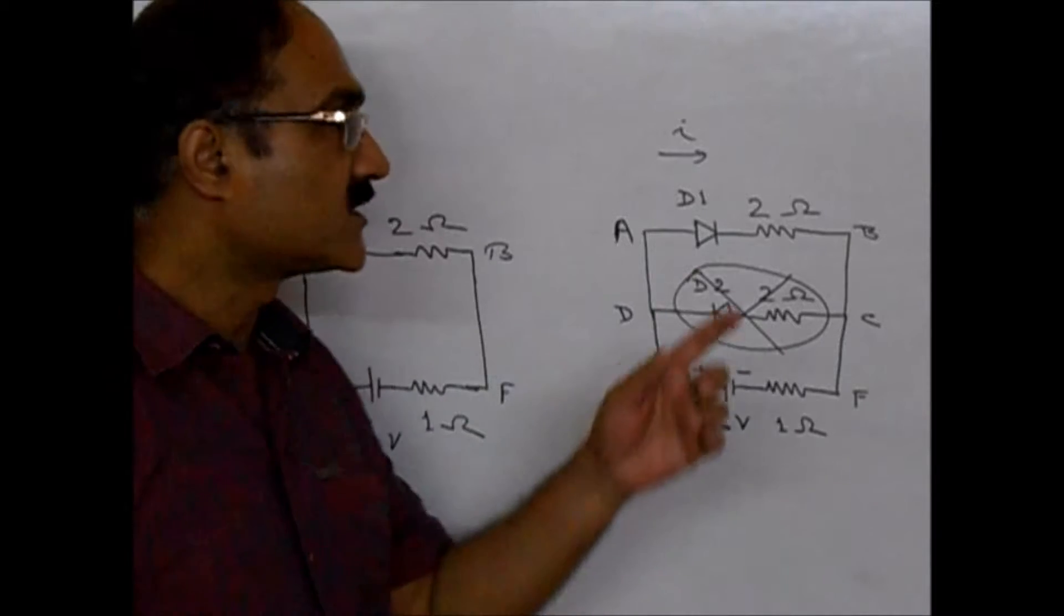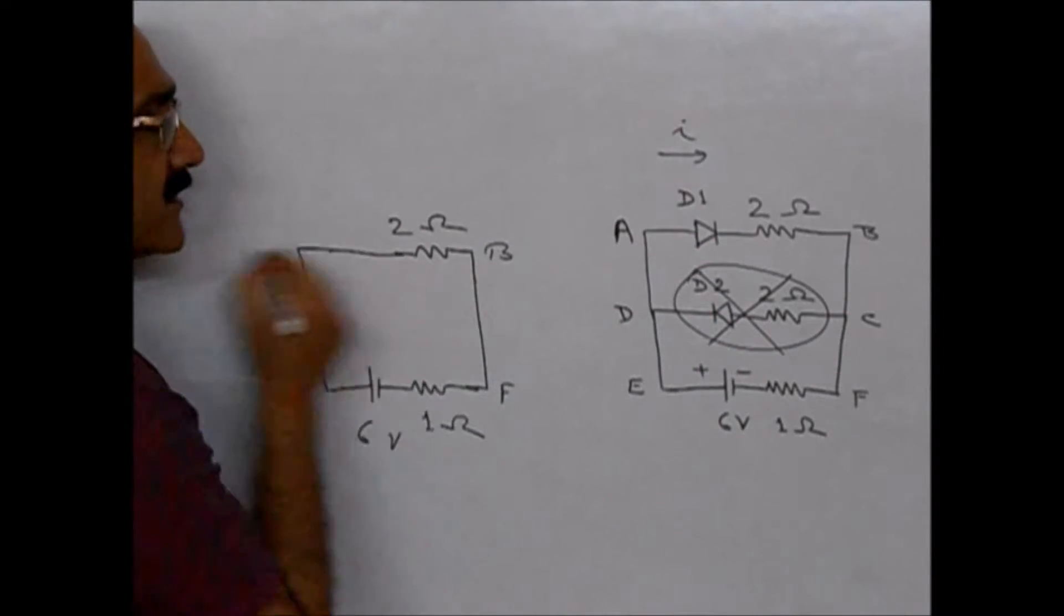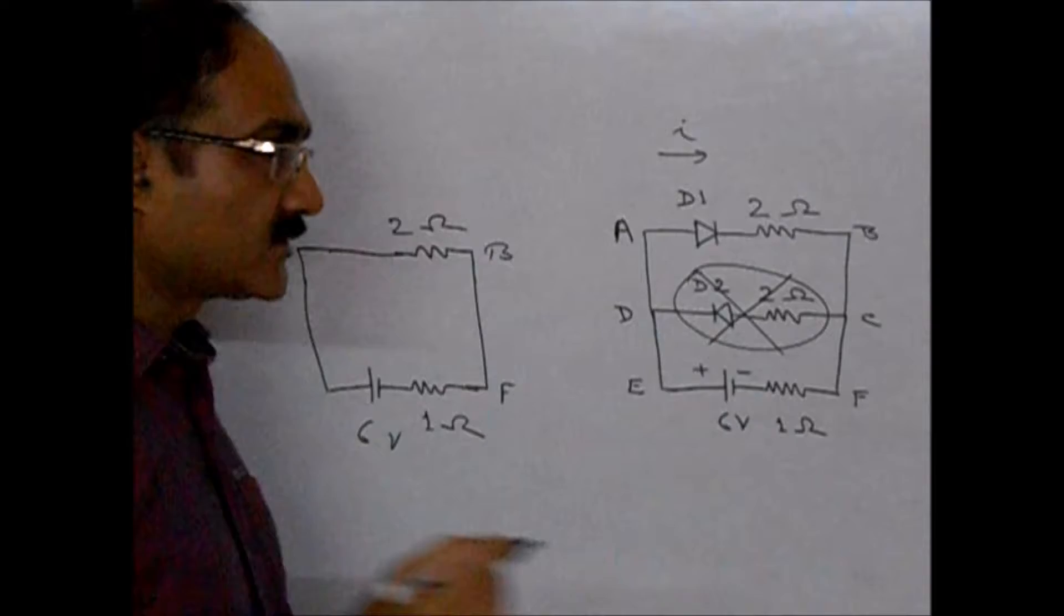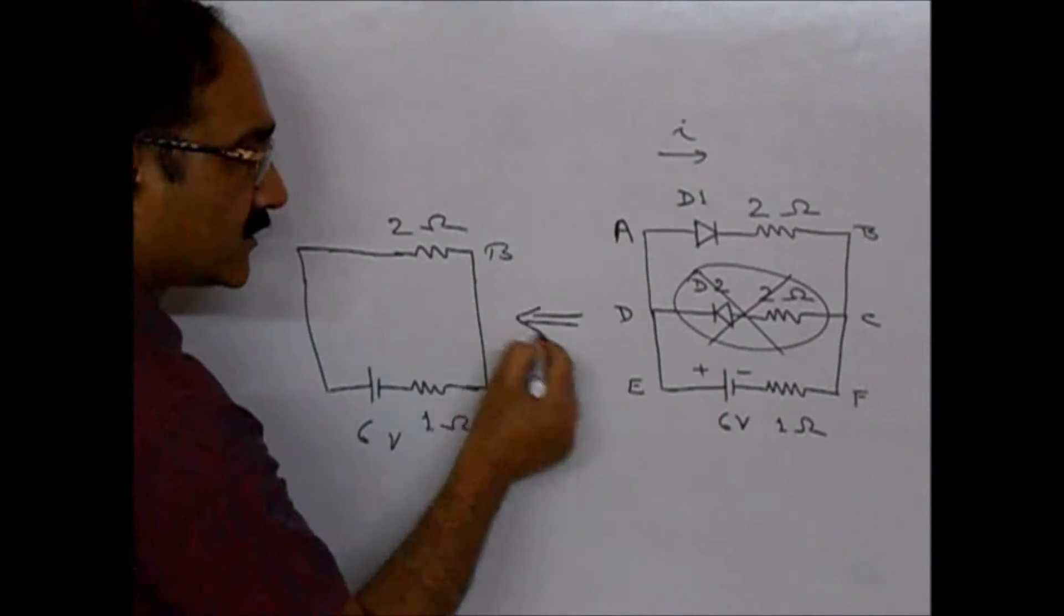So instead of D1, this 2-ohm, we can simply draw a line like this. So this circuit reduces to this.